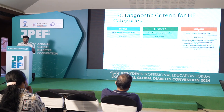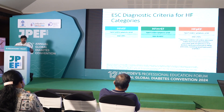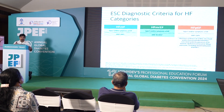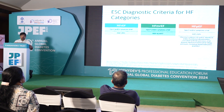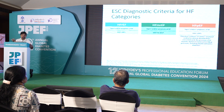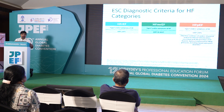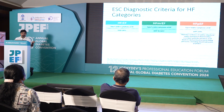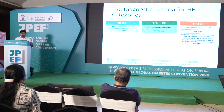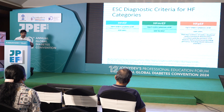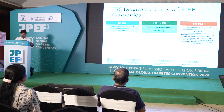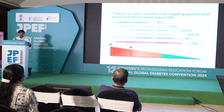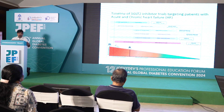Heart failure with preserved EF has been a very tough entity to treat. The conventional pillars used for heart failure — beta blockers, ACE inhibitors, ARBs, aldactone, and even ARNI — have not been found useful for preserved EF heart failure. It is in this context that SGLT2s were found to be beneficial even in that group — heart failure with preserved EF patients.